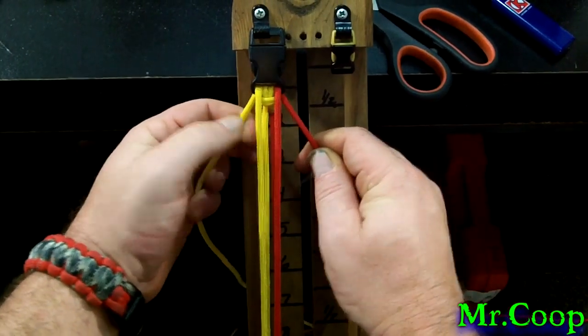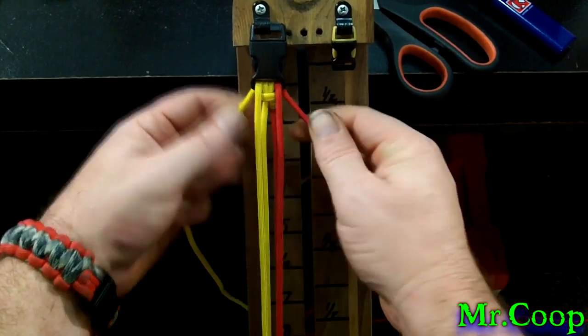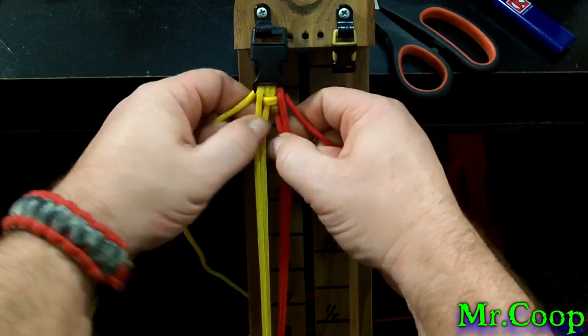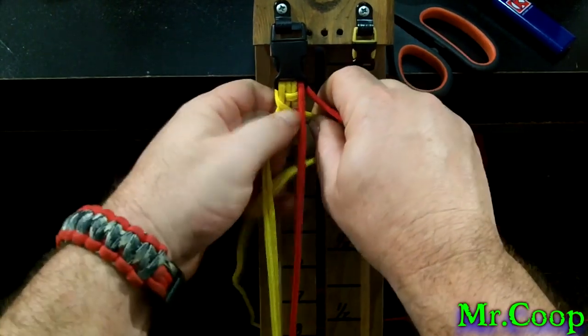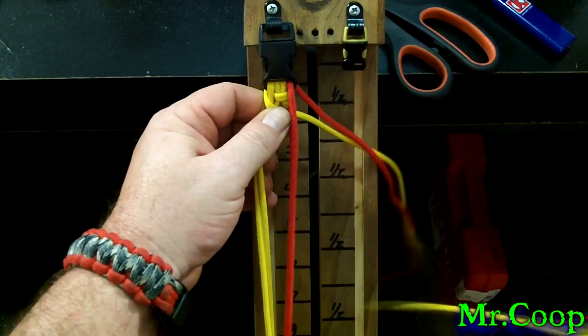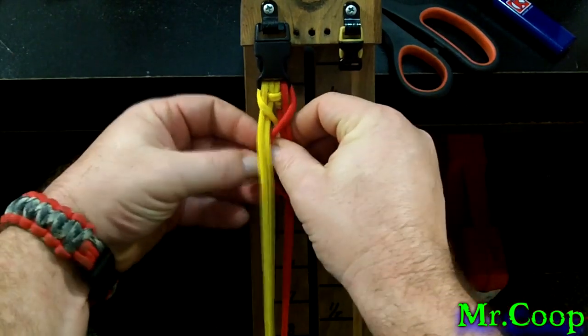Now we're just going to go ahead and start it off. You'll see you've got two cores. You've got a red side and a yellow side. So we're going to start off with the yellow side. We're just going to go over, pull it through. We're going to take the red, same thing, go over, pull it through.